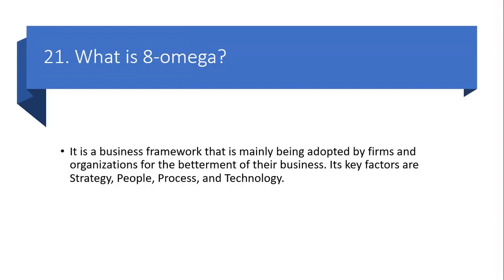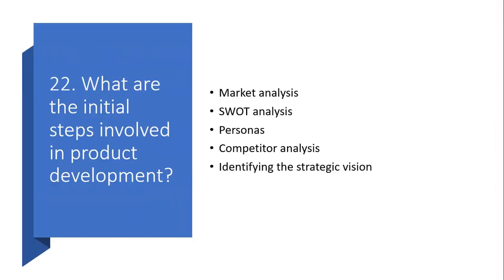Question 21: What is 8 Omega? It is a business framework mainly adopted by firms and organizations for the betterment of their business. Its key factors are strategy, people, process, and technology. Question 22: What are the initial steps involved in product development? Market analysis, SWOT analysis, Personas, Competitor analysis, and Identifying the strategic vision.